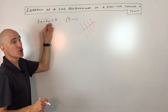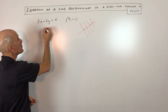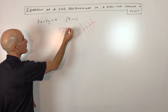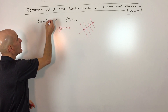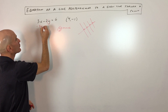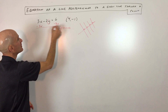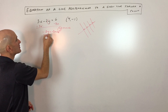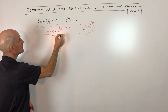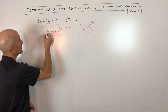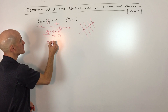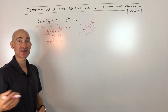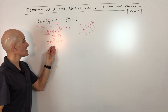First, we want to find the slope of this given line. We do that by rearranging it into slope-intercept form — solving for y. We subtract 3x from both sides to get negative 2y equals negative 3x plus 6, then divide everything by negative 2 to get y by itself. That gives us y equals positive 3 halves x minus 3. The number in front of the x is the slope, which in this case is 3 halves.